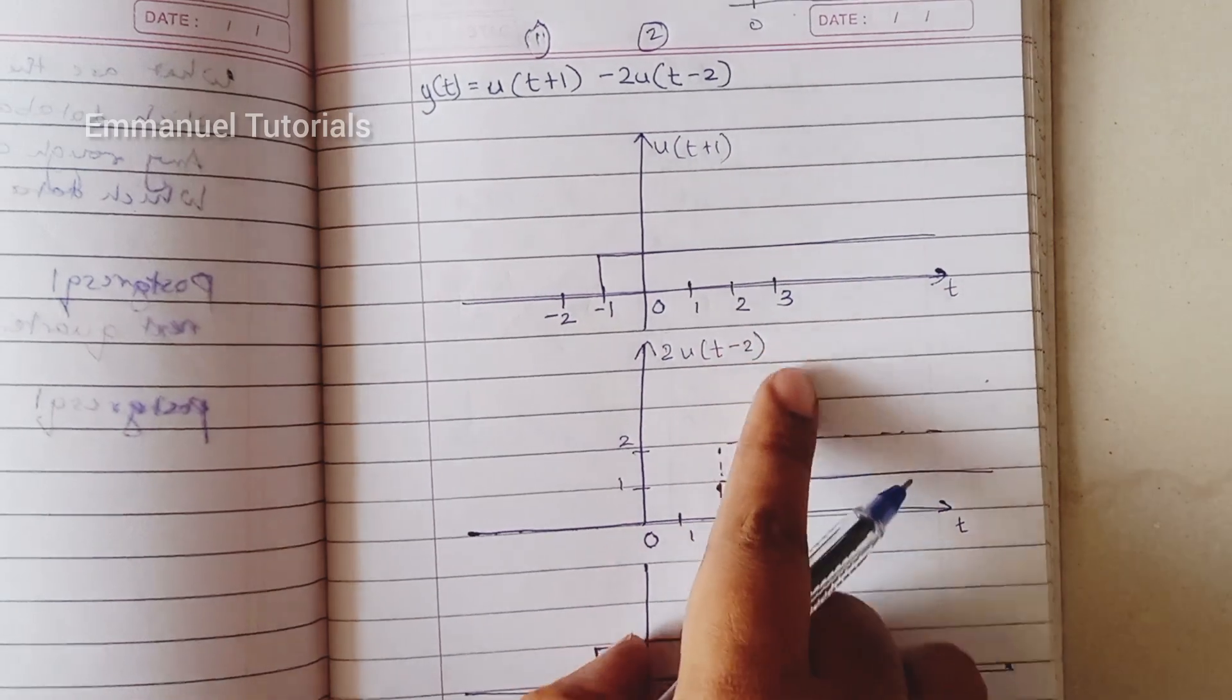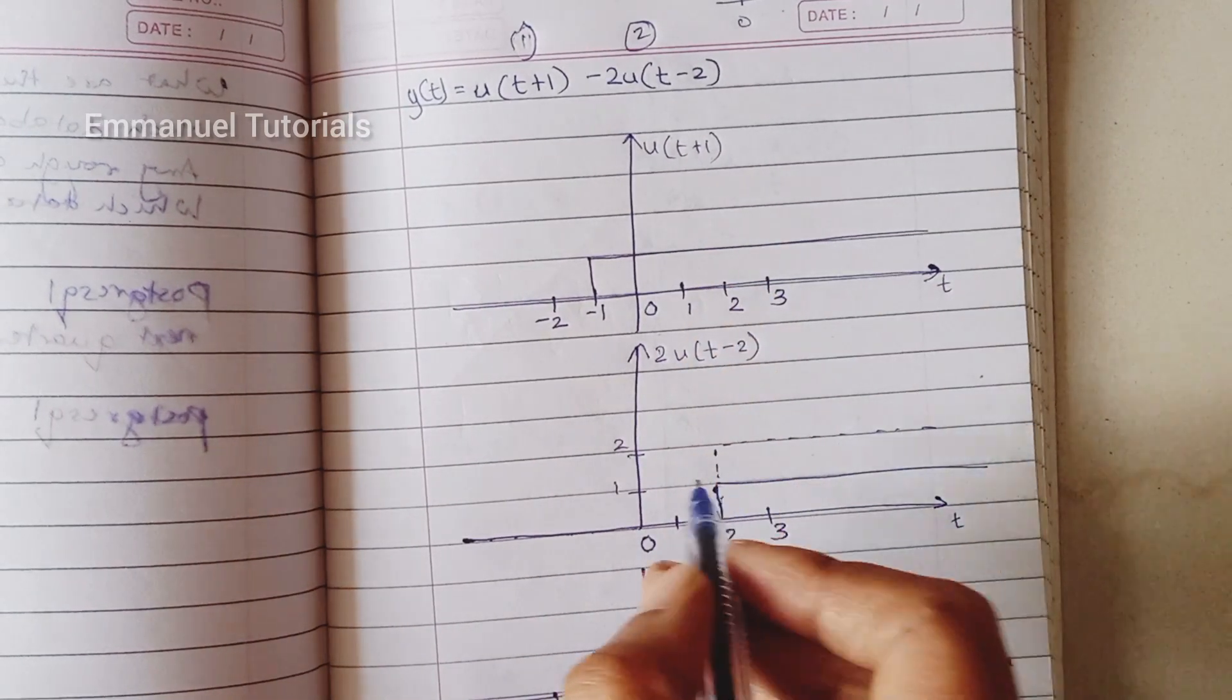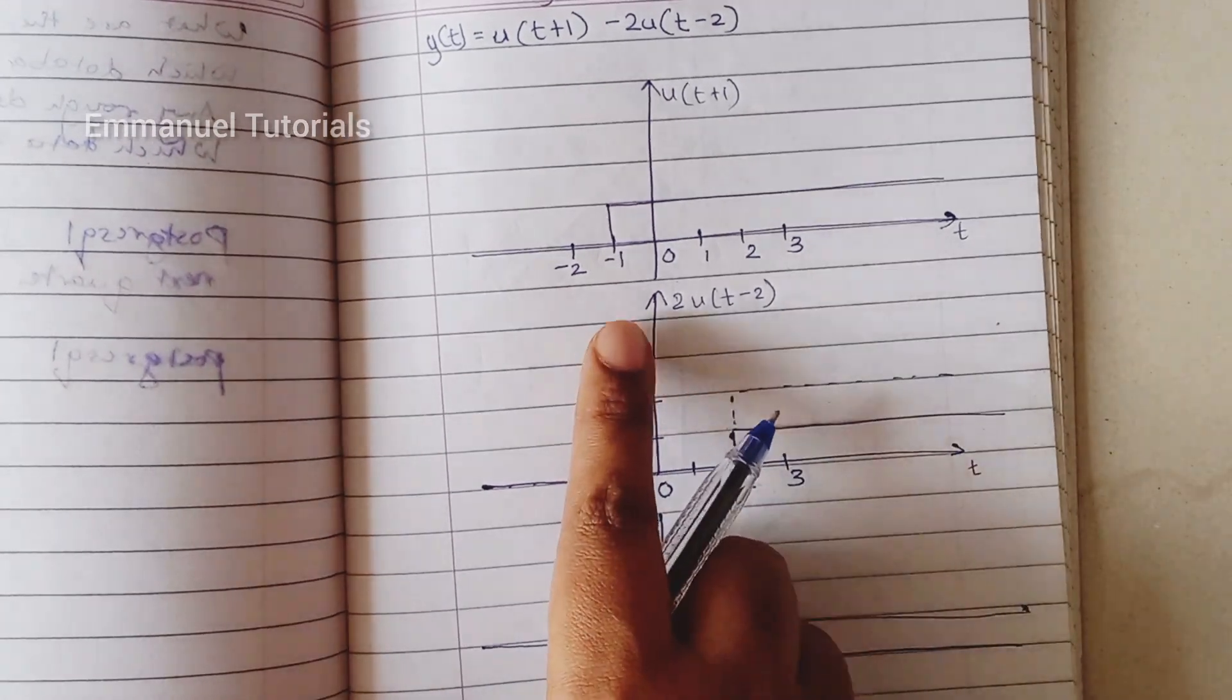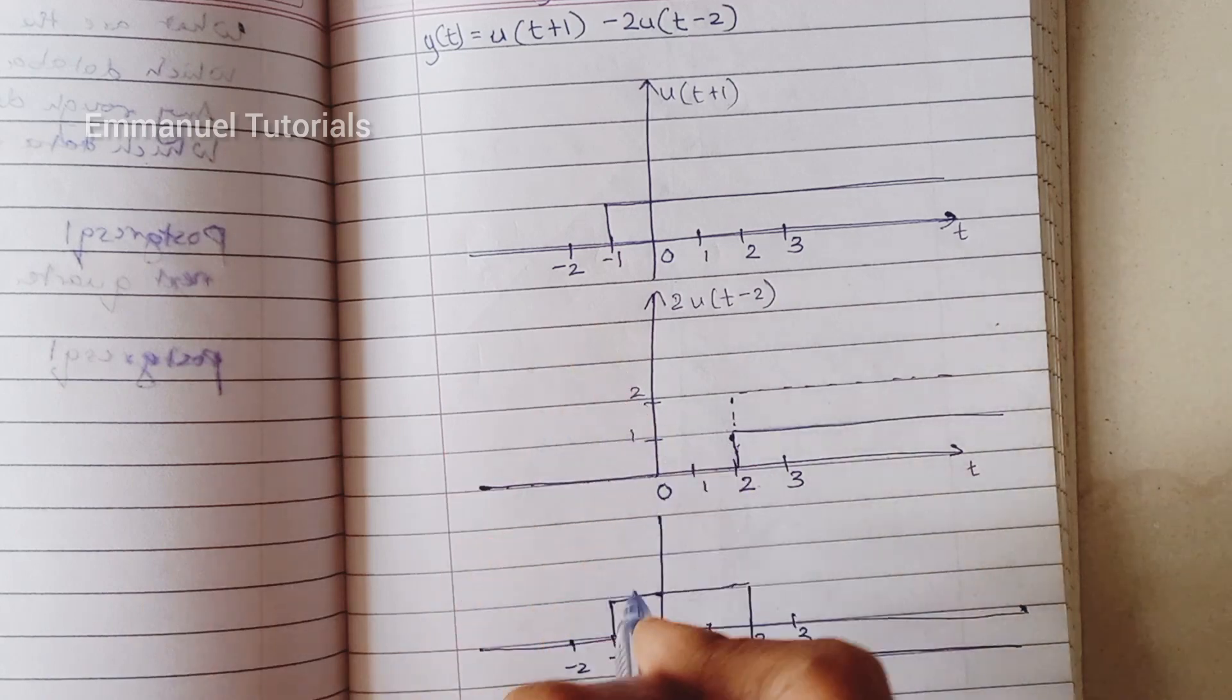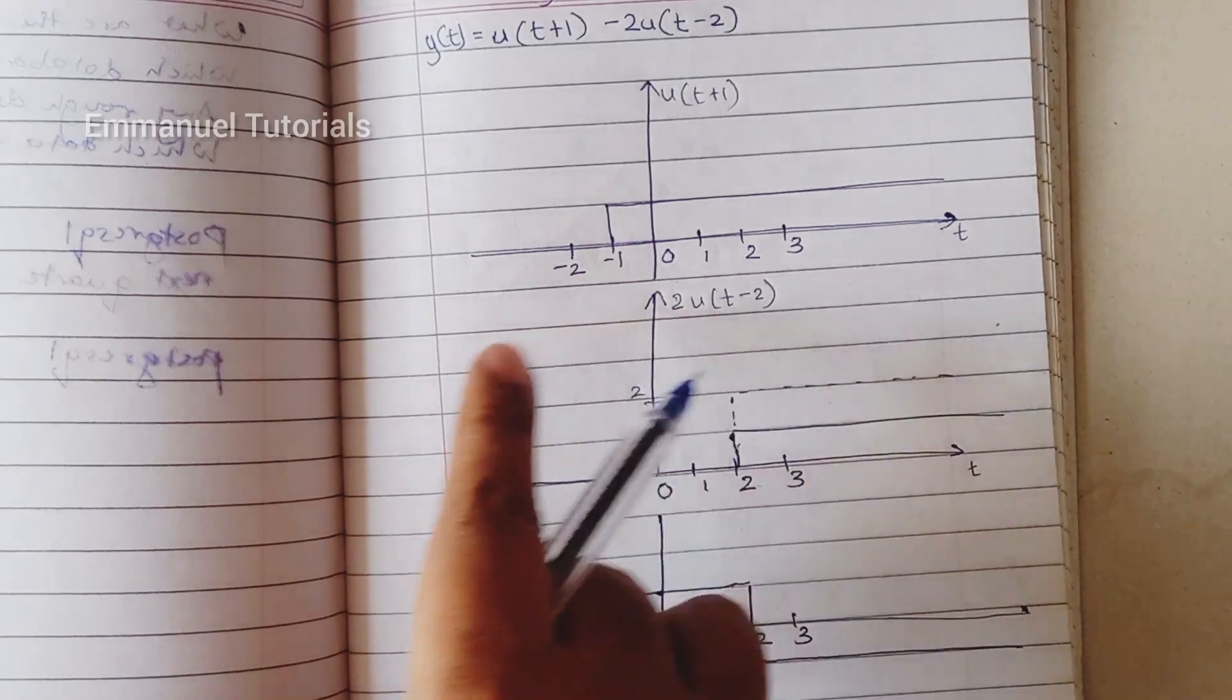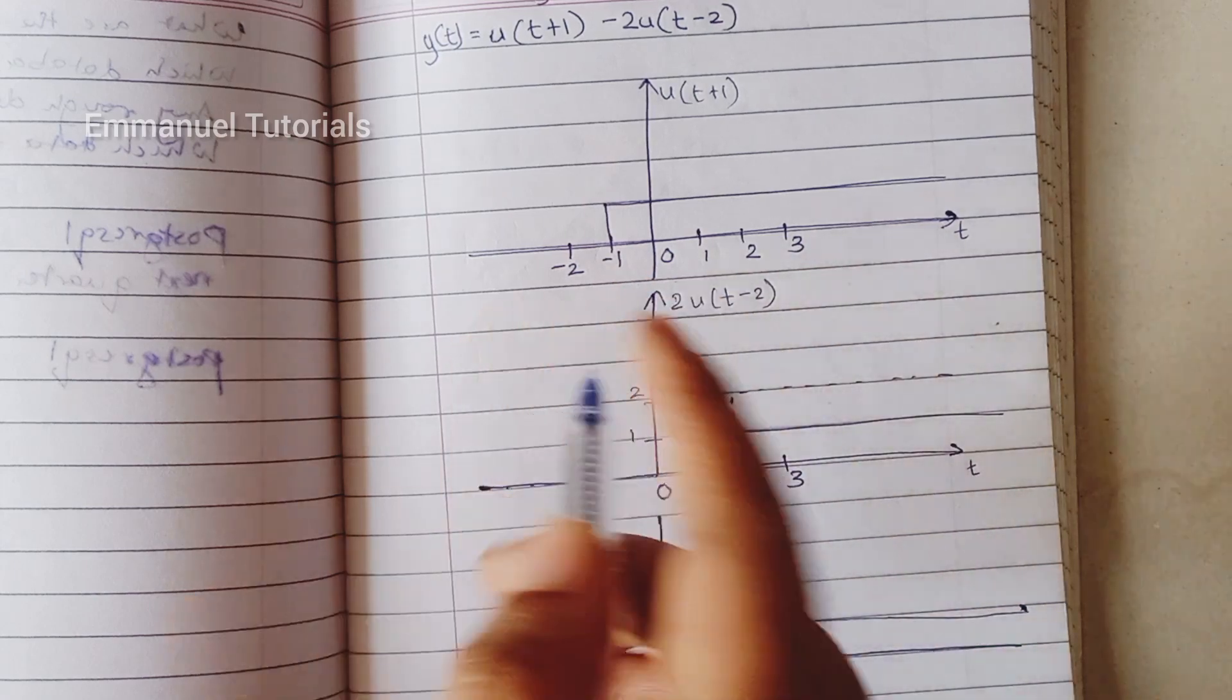Now what we have to do is subtract the second part, second signal, from the first signal. So let's start. Here you can see the first or the extreme left point in both the signals is minus 1, so from minus 1 only you have a definite value which is not 0.